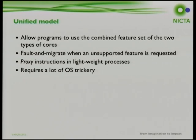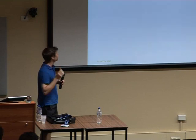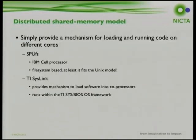The unified model allows programs to use a combined set of features but lets the kernel handle migration using fault-and-migrate. If you execute an SSE instruction on an Atom it faults, and the OS migrates to the core that supports it. Alternatively, you could proxy the instruction in a lightweight process and leave the main process on the other core. This has performance overheads as tasks are migrated on an instruction-by-instruction basis.